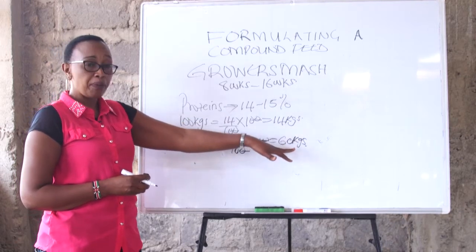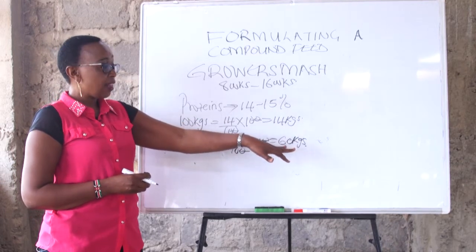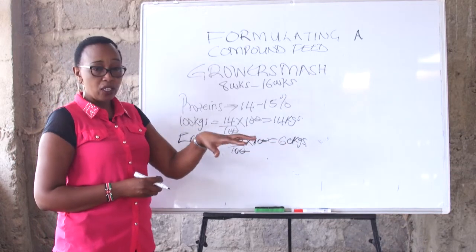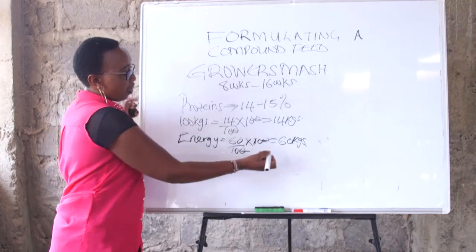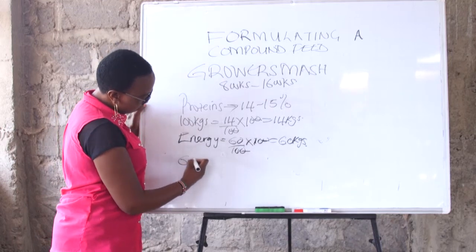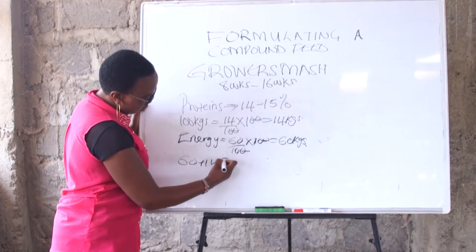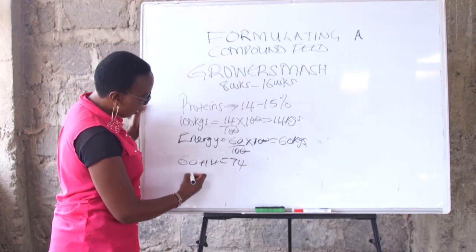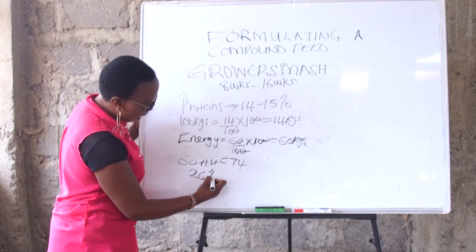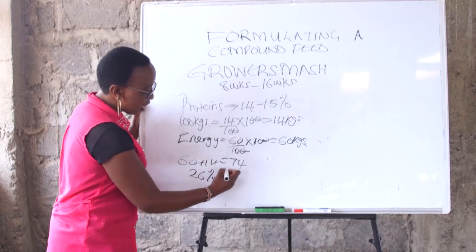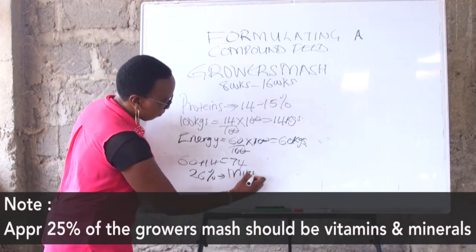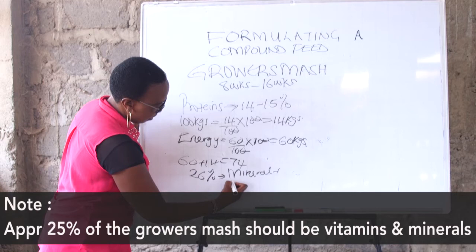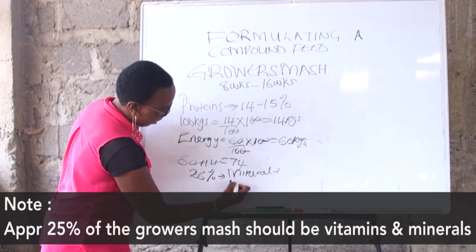If you have 60 plus 14, you will have 74. Meaning that in the grower's mash, 26% of the feed will be in minerals plus vitamins.